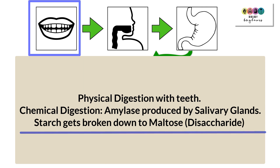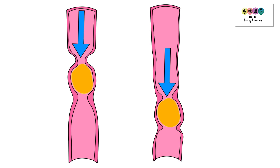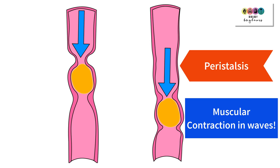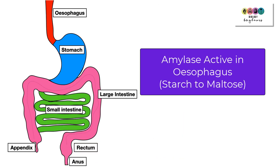The food leaves your mouth and enters the esophagus, where it is shunted forward. The bolus moves down through the esophagus due to waves of muscular contraction. The esophageal wall contains smooth muscle that can contract and squeeze — this is known as peristalsis — and it moves the bolus of food down towards the stomach.